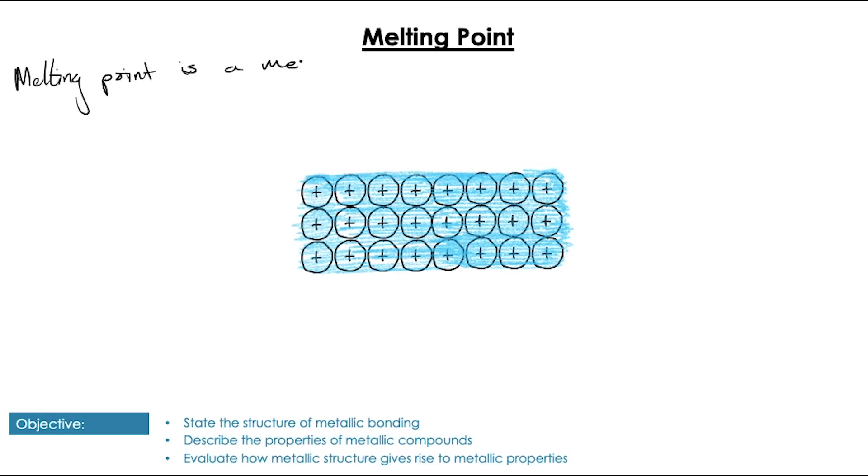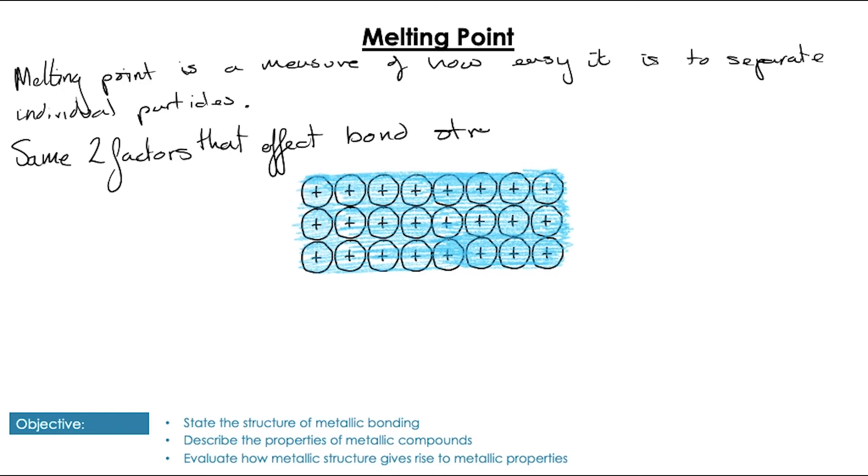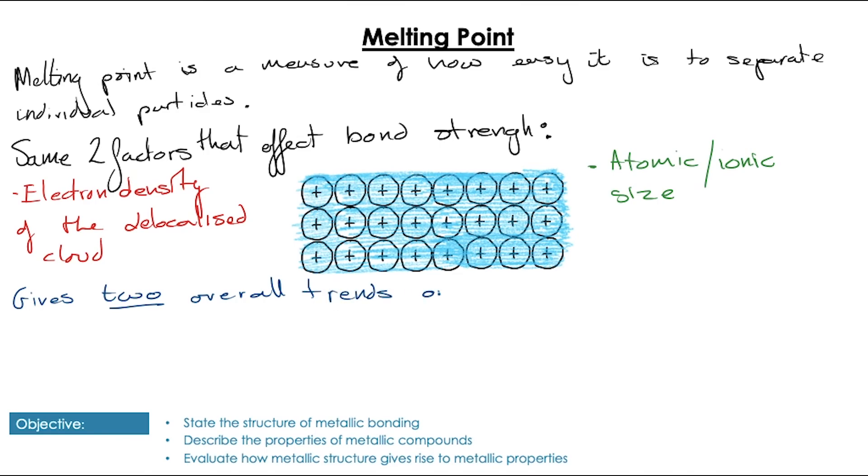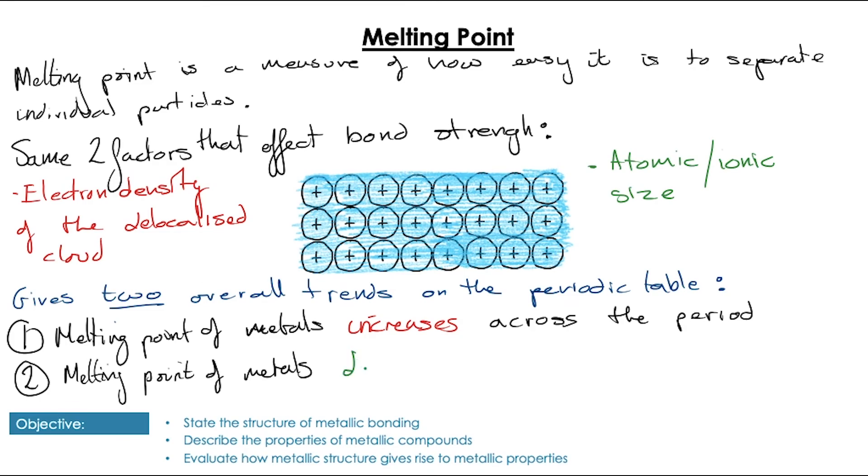So lastly, looking at the melting point, we know that melting point is effectively a measure of how easy it is to separate the individual particles. And just as we mentioned previously about the factors that affect the bond strength, those two same factors are at play when we think about melting point. We've got electron density and we've got the ion size and both of those combine to give most metals quite a high melting point. But it does give us two trends on the periodic table with regard to the melting point of metals. And that's the melting point of metals increases as we go across the periodic table because, of course, we're increasing the number of valence electrons that they can donate to the delocalized electron cloud. And the melting point of metals decreases as we go down the group, of course, because the ions are getting larger as we go down the group.